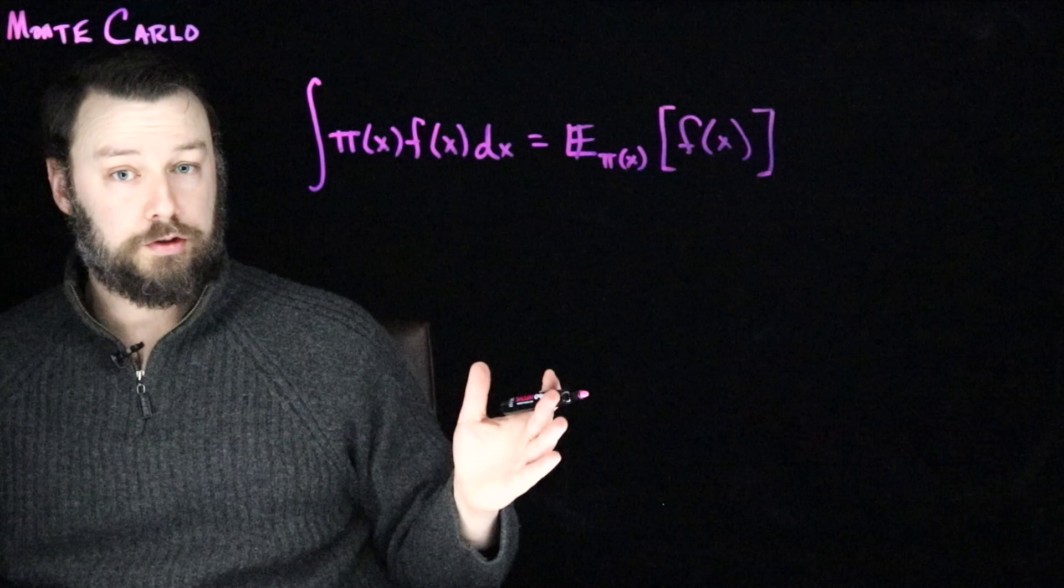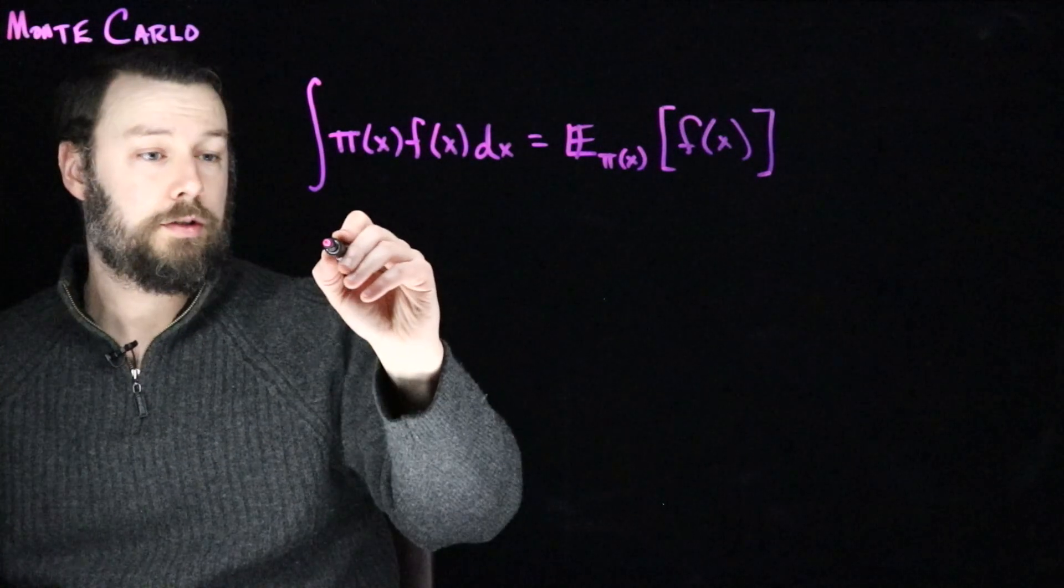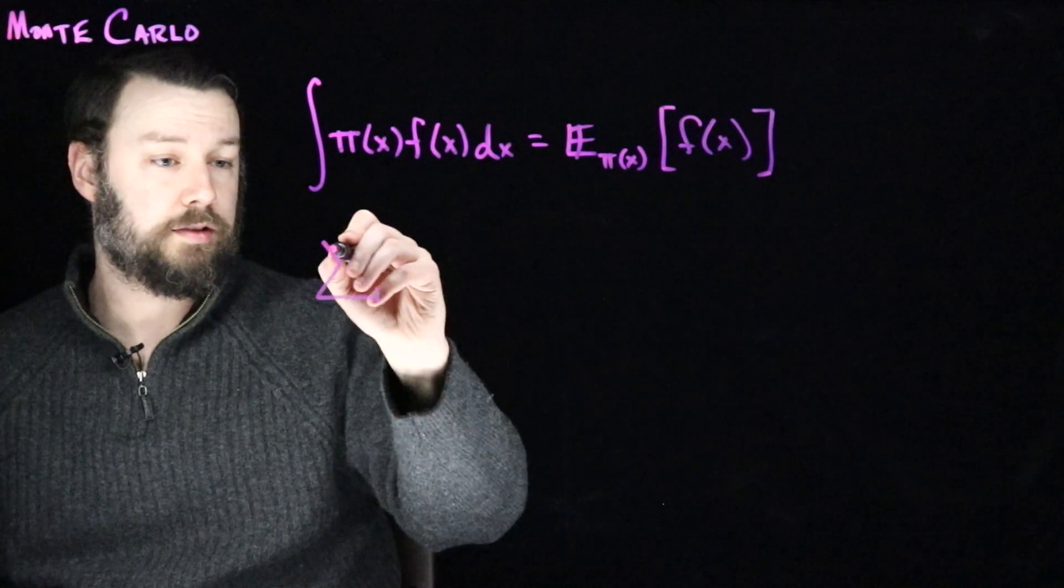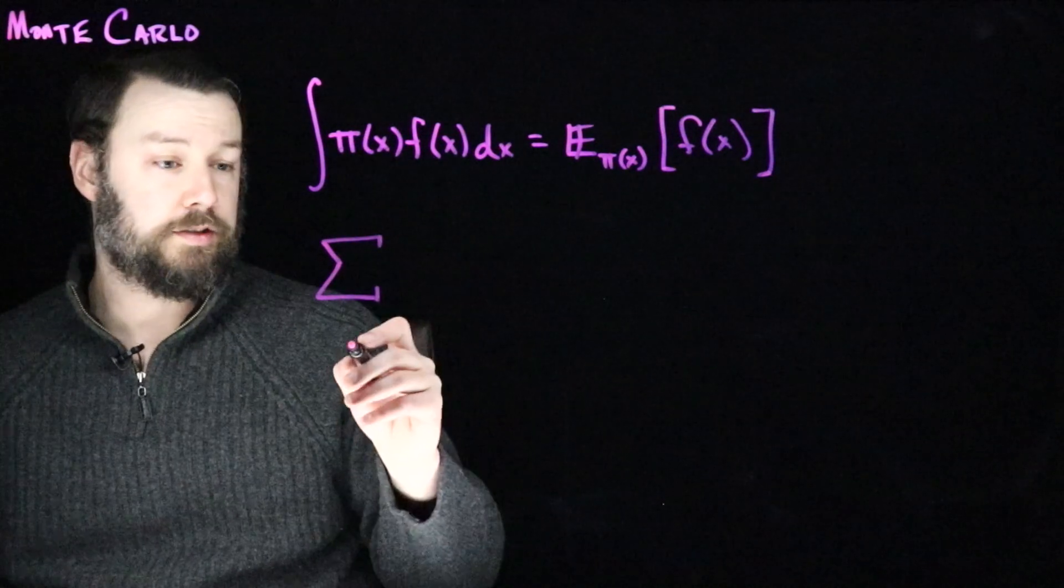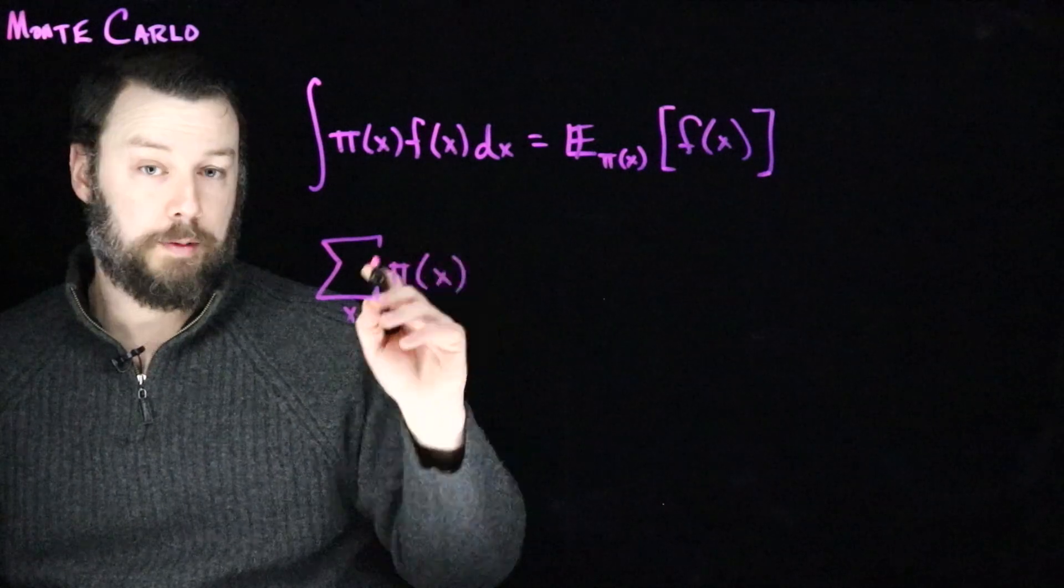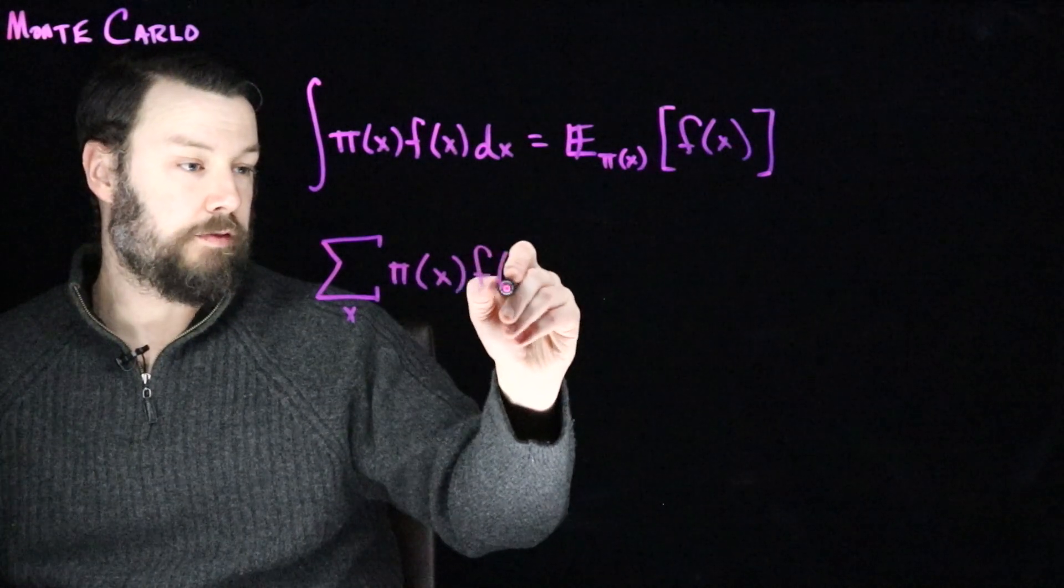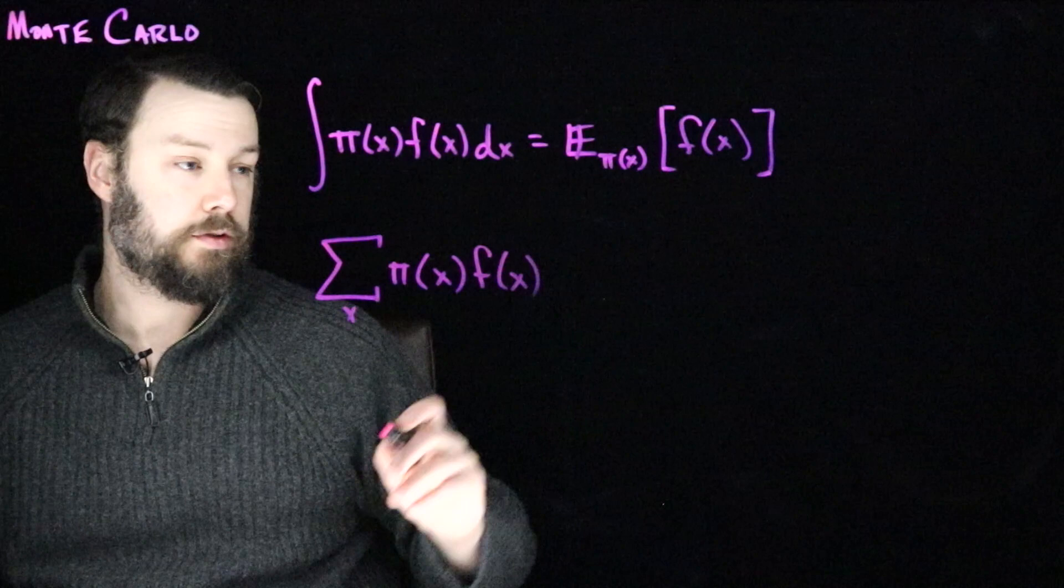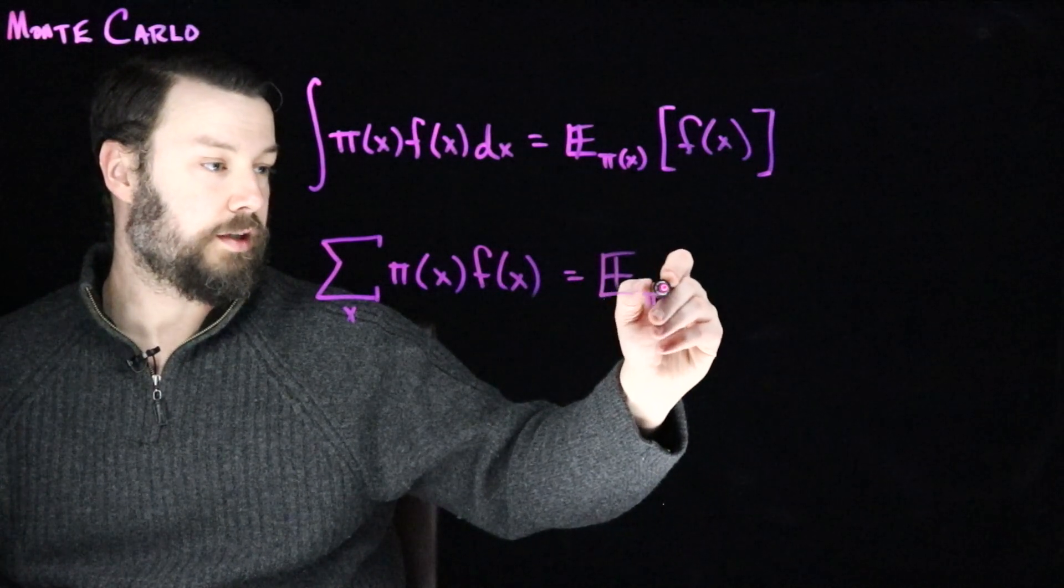It could also be that we're estimating sums. So it could be that x takes values in the discrete space, and so we're going to sum over the possible values of x, and pi is now a probability mass function, and f is something that is consuming discrete values. We would still call this an expectation.